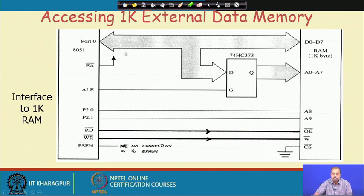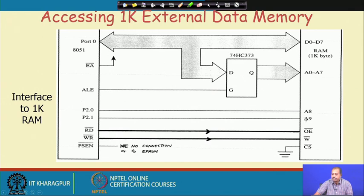For external data memory connection, suppose we are connecting 1 kilobyte of RAM. A 1KB RAM has 10 address lines. The lower order address bus A0 to A7 should be connected, and A8 and A9 — this memory chip has 10 address lines A0 to A9. A0 to A7 come from Port 0 through the 74373 demultiplexing of the address bus, and A8 and A9 come from Port 2 bits 0 and 1.